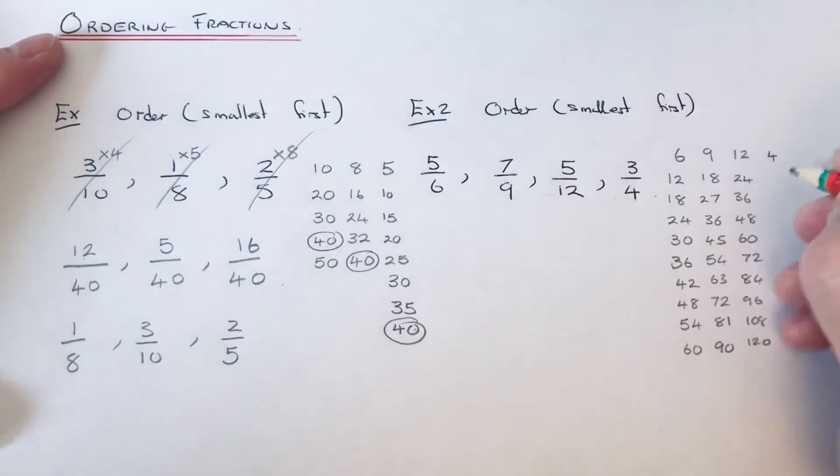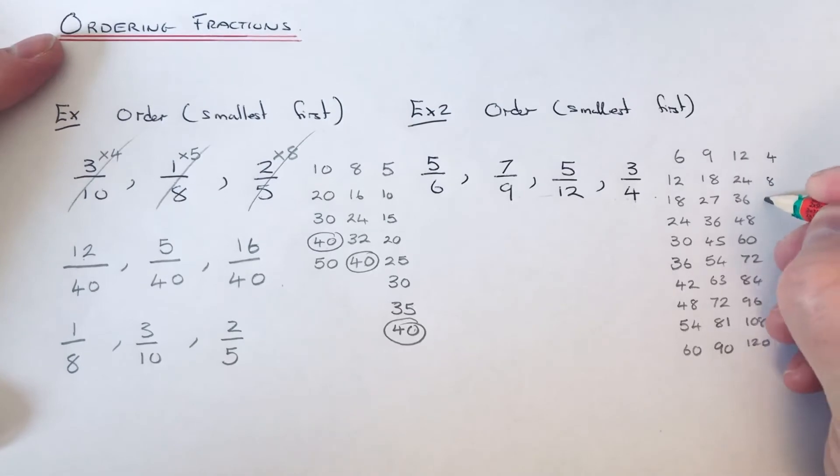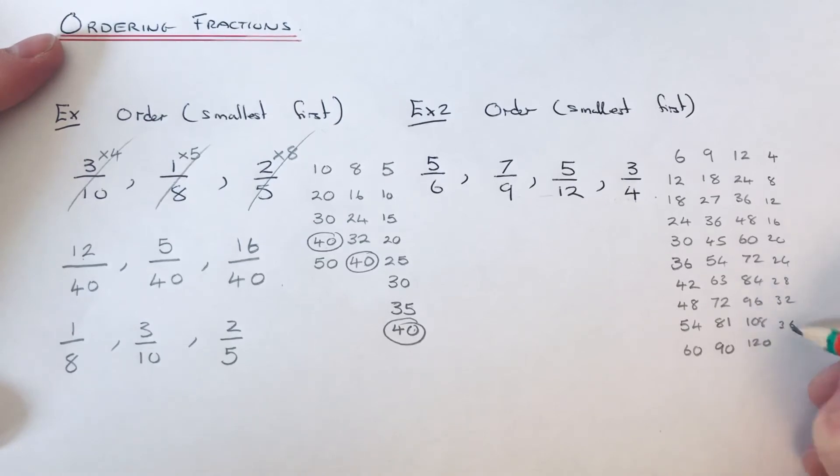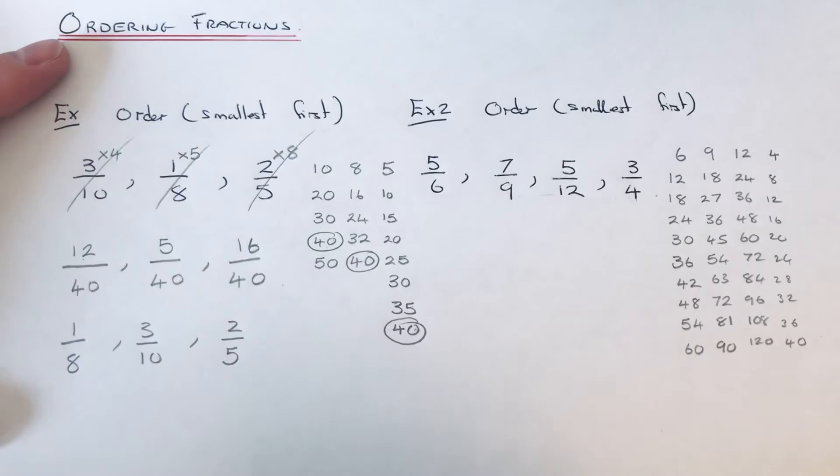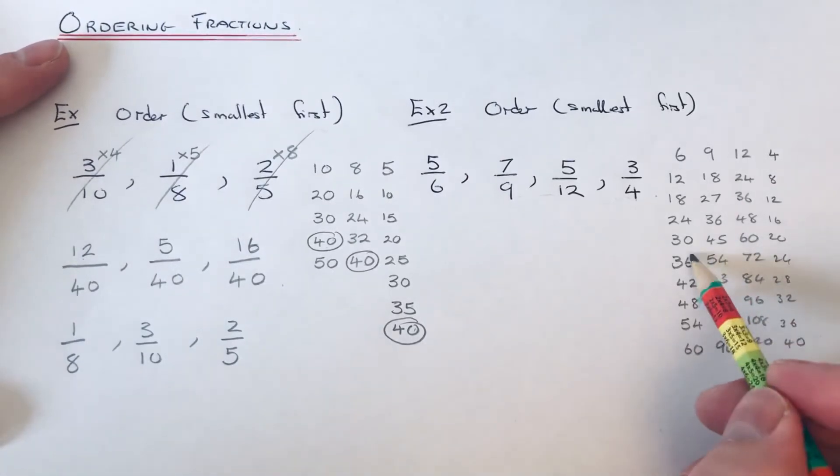And our 4's. So we need to look for our common multiple, and I think it's looking at 36. We've got 36 in all the multiples.